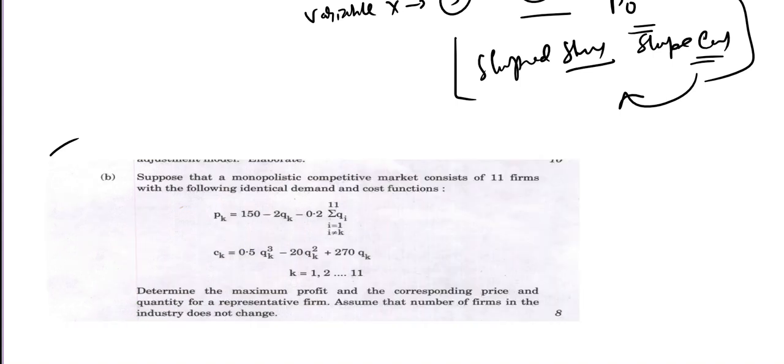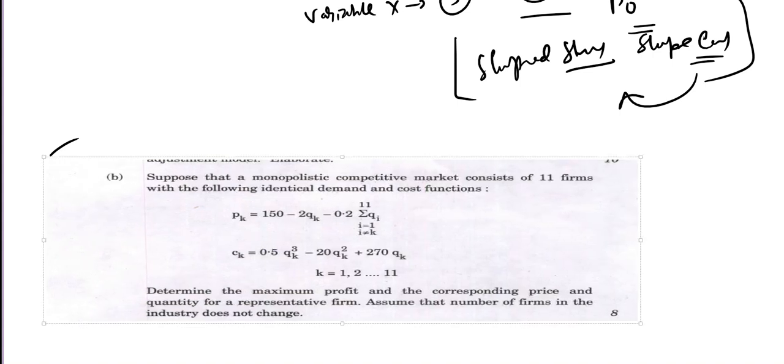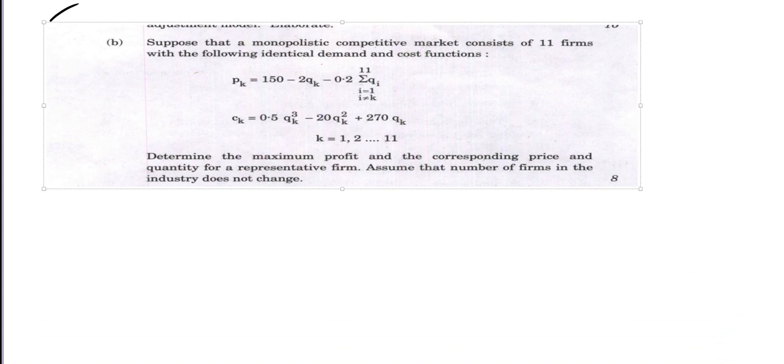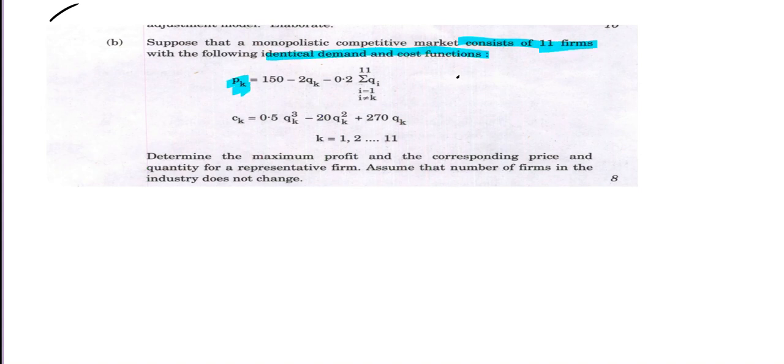Now we will do 6B IS 2023. A monopolistic competition market is given. It consists of 11 farms with the following identical demand and cost function. Determine the maximum profit and the corresponding price and quantity for the representative farm. Assume that the number of farms in the industry doesn't change.